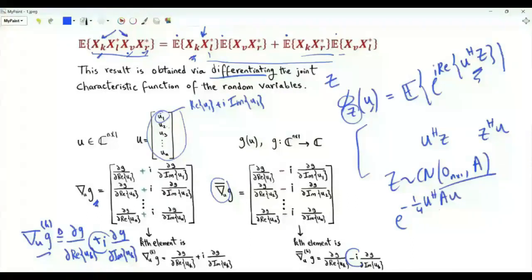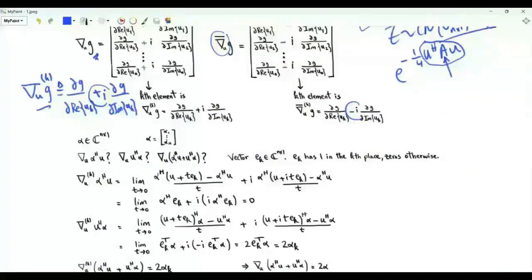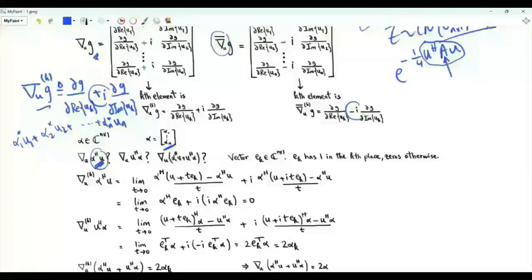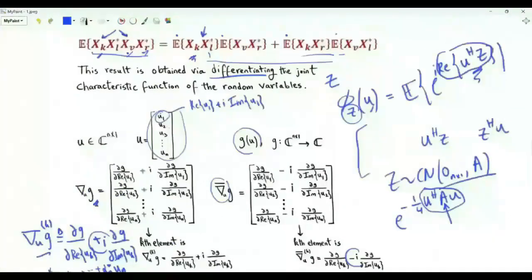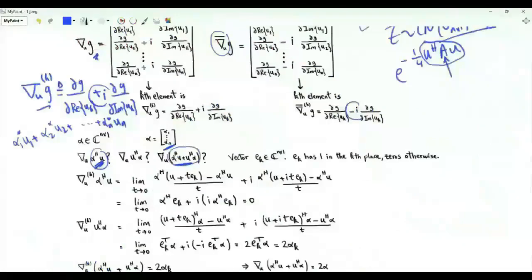If z is a circularly symmetric, zero-mean random vector with covariance matrix A, then the characteristic function is e to the minus one-quarter u Hermitian A u. We are also interested in functions of vector u that are quadratic forms with a Hermitian matrix. Let's start with the linear functions of u. Alpha is a vector of the same dimensionality as vector u. Alpha Hermitian u is alpha_1 conjugate u_1 plus alpha_2 conjugate u_2, all the way to alpha_n conjugate u_n. The real part of the inner product between u and z is one-half the complex quantity plus one-half its complex conjugate, which is why we are interested in functions of this form.